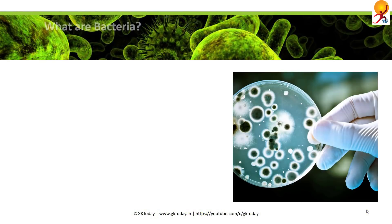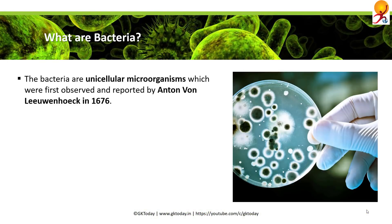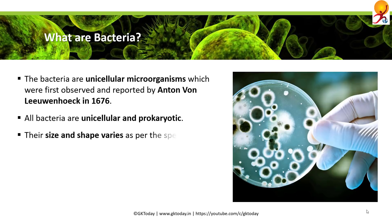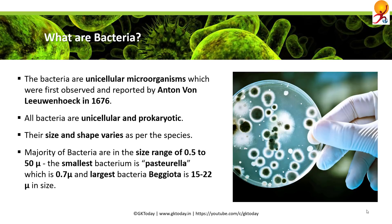What are bacteria? Bacteria are unicellular microorganisms which were first observed and reported by Anton van Leeuwenhoek in 1676. They are unicellular and prokaryotic. Their size and shape vary according to the species and usually range between 0.5 to 50 microns. The smallest bacteria is Pasteurella at 0.7 microns, and the largest bacteria is Geota, ranging between 15 to 22 microns in size.